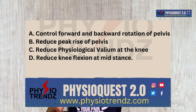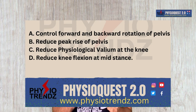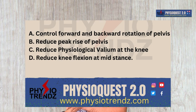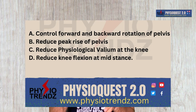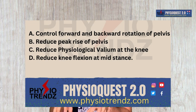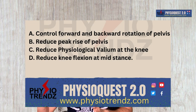Option A, which is about forward and backward pelvic tilt, cannot be observed much in the frontal plane — that is observed in the sagittal plane. Option D, which is about reducing knee flexion in mid stance, also has to be observed in the sagittal plane. So I'm not going to focus on those two options.